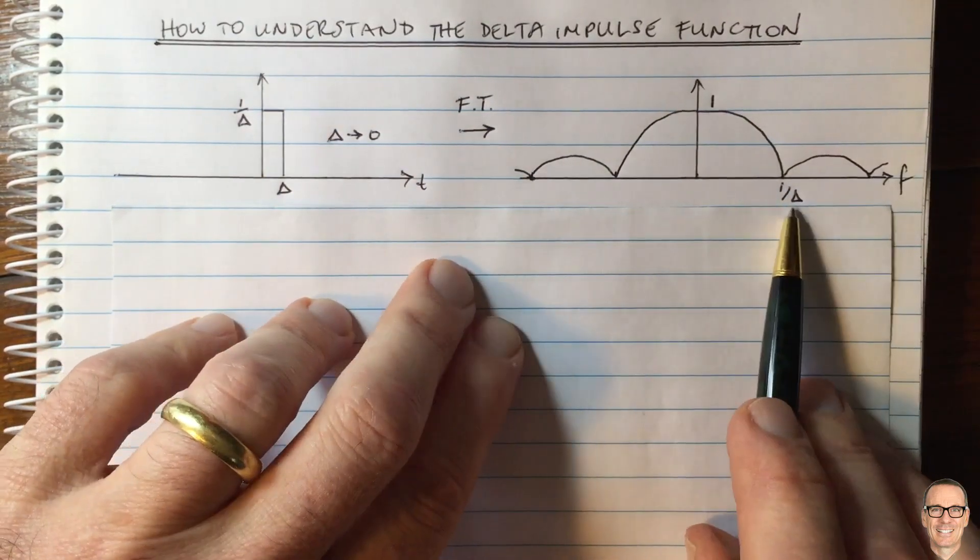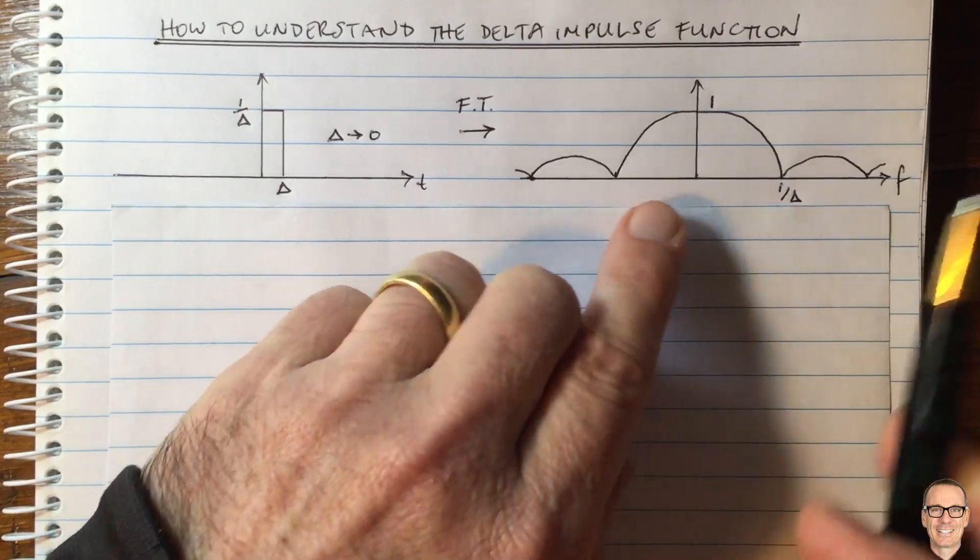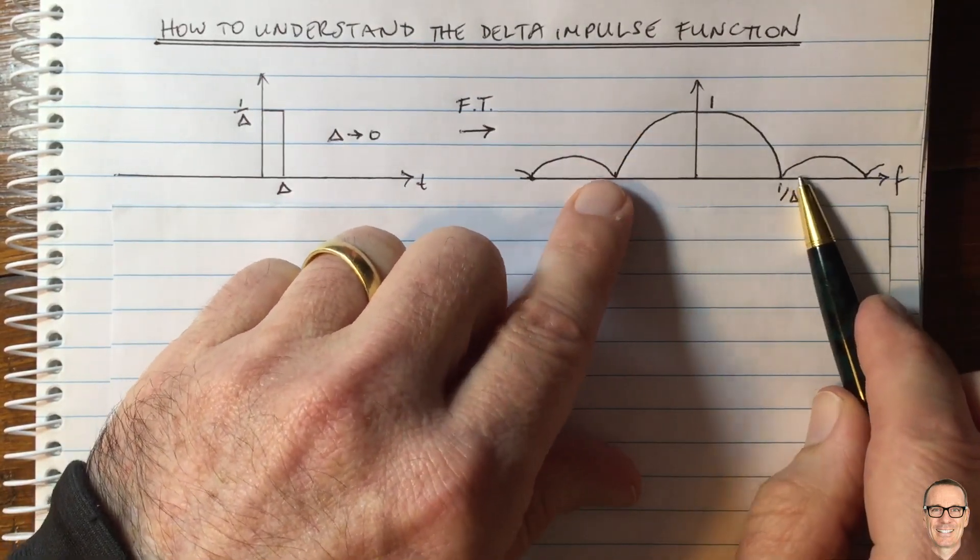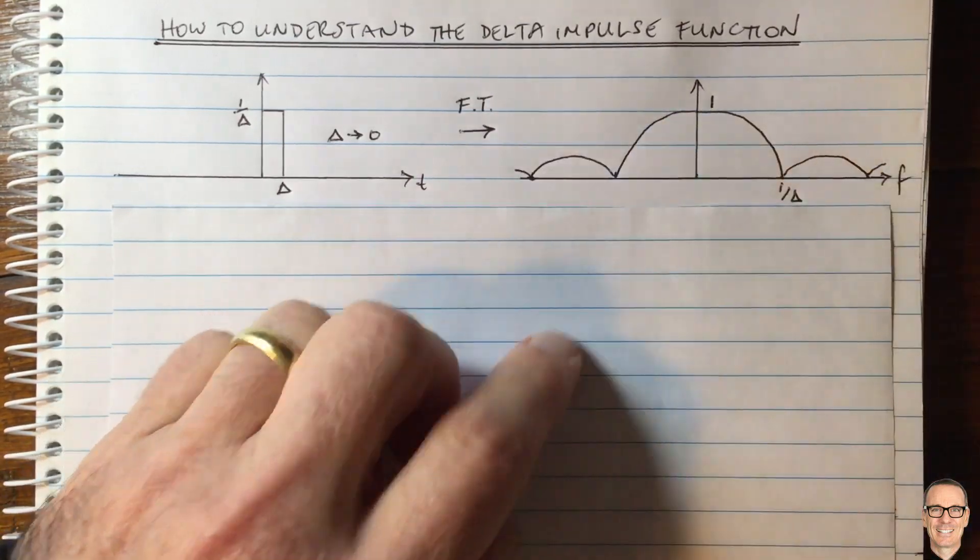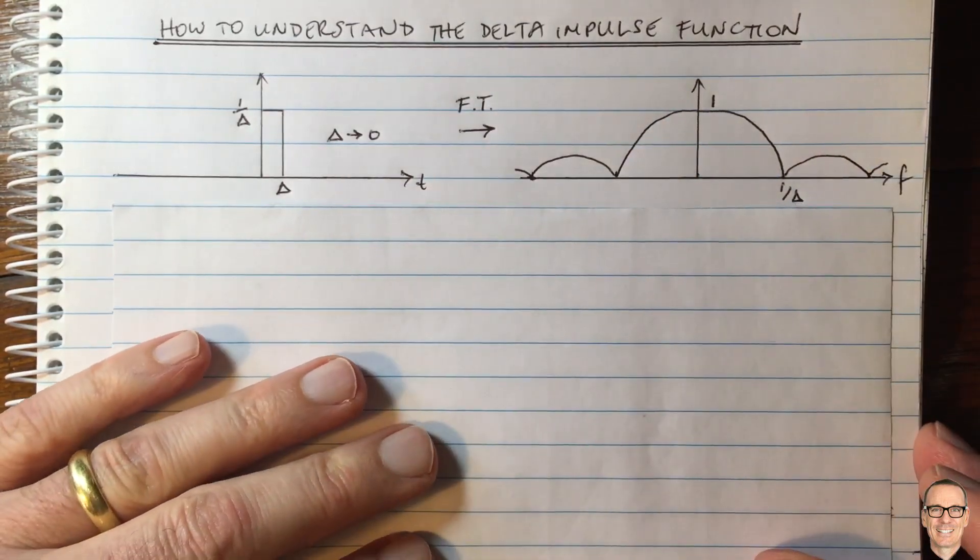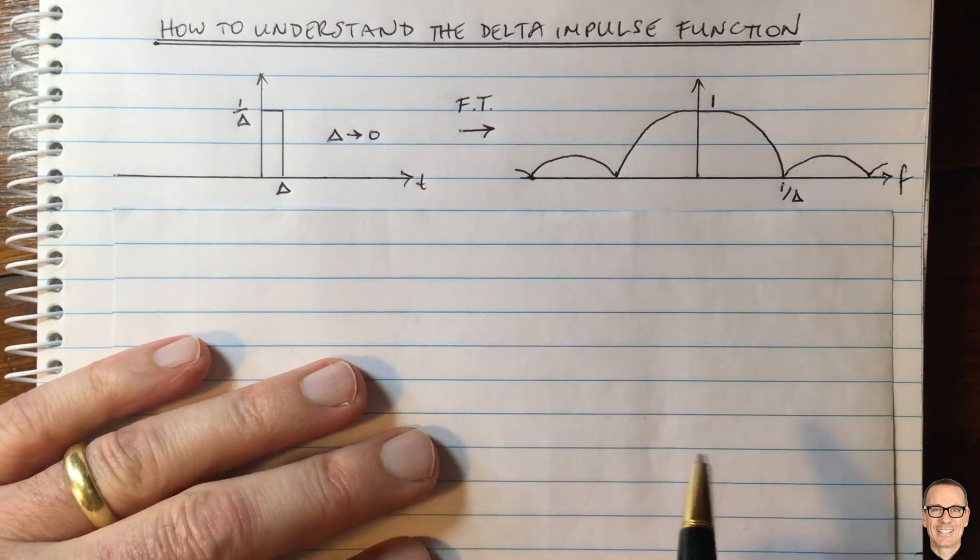Now let's think about what happens here. As delta goes to 0, this sinc function spreads out. These crossing points go out to infinity, and this becomes a flat line. That's what we're getting for a delta function.